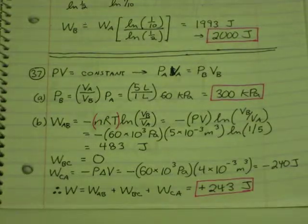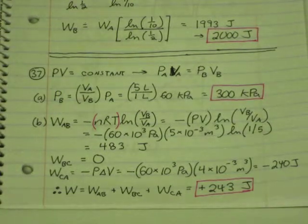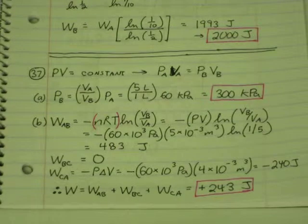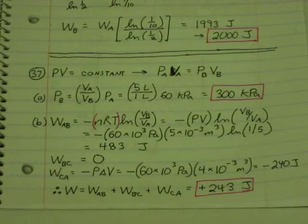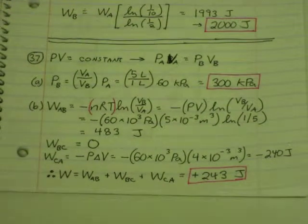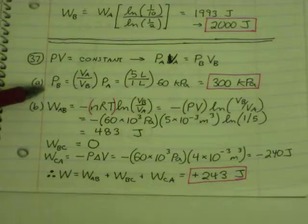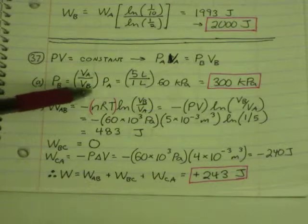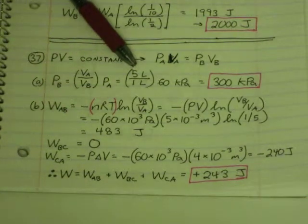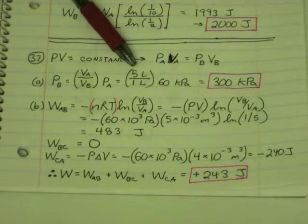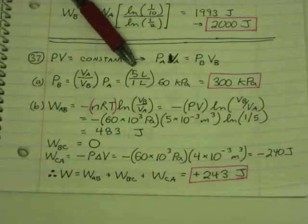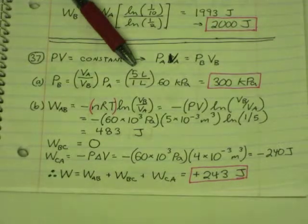37. Using, starting with the ideal gas law, PV equals nRT. For this case, we can say PV equals constant. So the pressure at A times the volume at A equals the pressure at B times the volume at B. Setting up the ratio, solving for pressure at B, it's VA over VB times PA, and you get 5 liters divided by 1 liter. Those liters will cancel out, so it's a 5 to 1 ratio, times 60 kilopascals. So the answer to part A, 300 kilopascals.